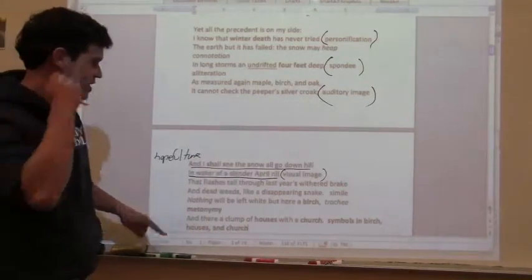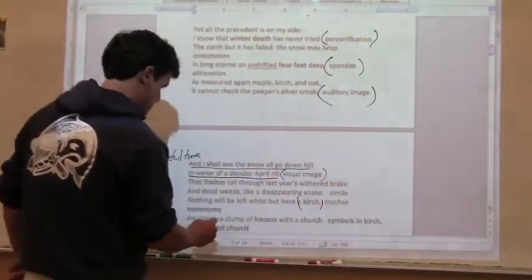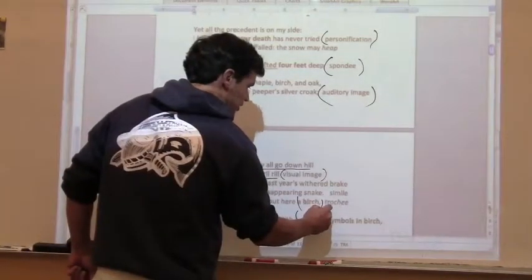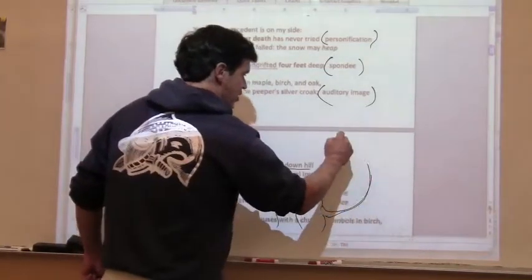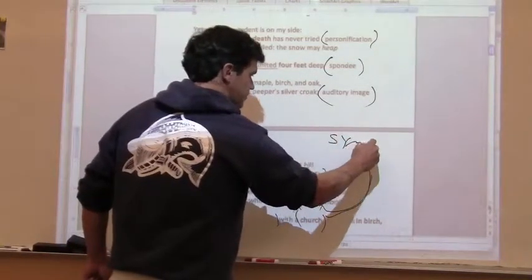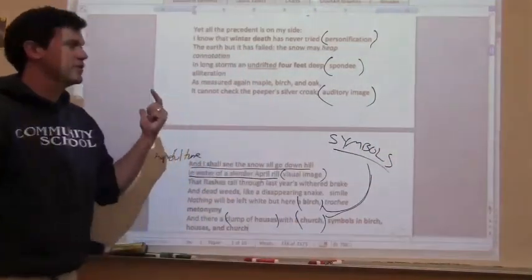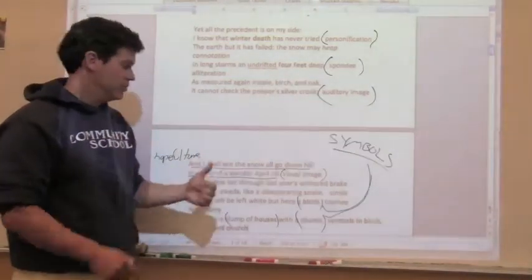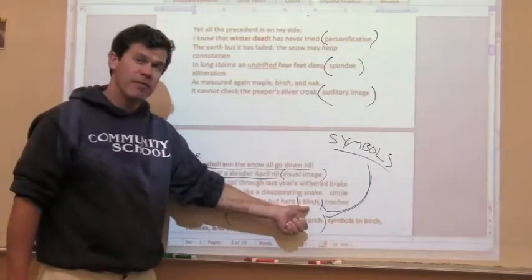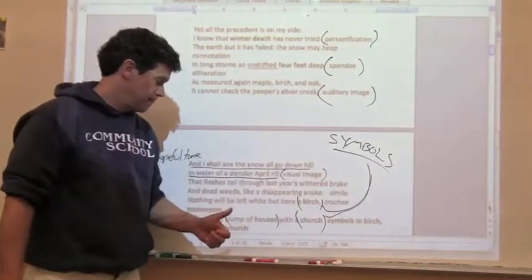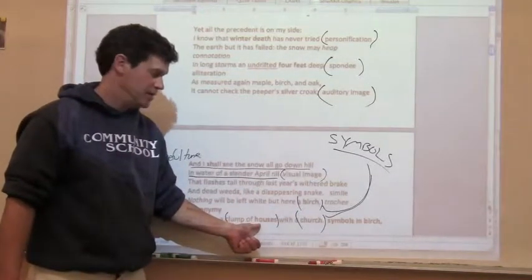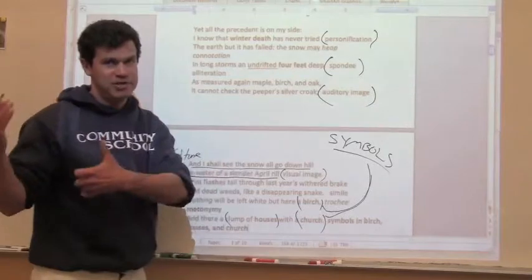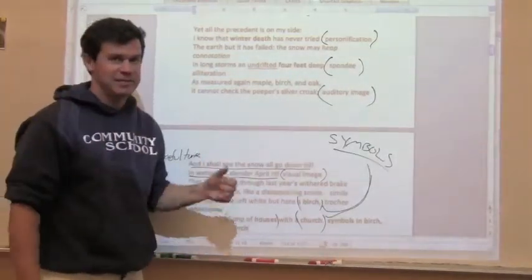And that nothing will be left white but here a birch and there a clump of houses, white houses—Vermont, New Hampshire—and then a church. And I'm going to argue that the most important poetic devices of all these are they are all symbols. So out of this fear of winter coming and never letting go, out of this fear of this heaping of snow, he says all that will be left white will be a birch—nature growing from the runoff—a clump of white houses—family, community—and a white church. If you've ever been to New England, you know this scene: birch trees, white houses, white church, classic pastoral Vermont.